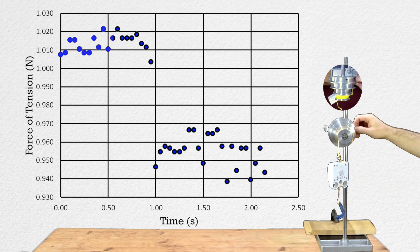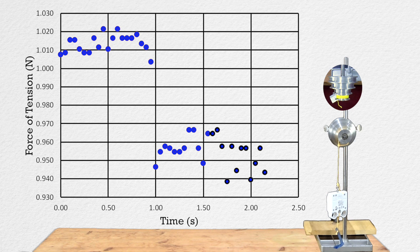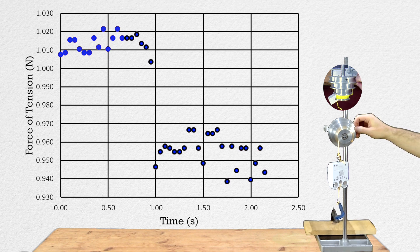You can see the measured force of tension decreases as soon as I let go of the pulley and the hanging mass begins accelerating downwards. In order to understand why this happens, we need, of course, the free body diagrams.